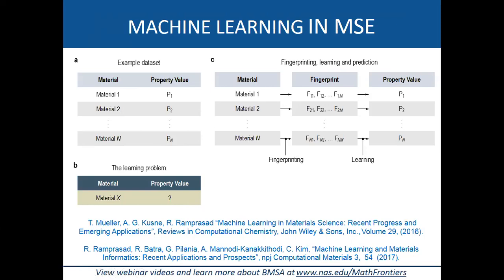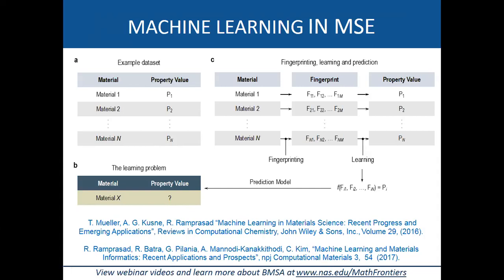Once fingerprinting is accomplished, we establish a mapping between those vectorial fingerprints and the property — a process we call learning, or machine learning or statistical learning. The learning step is largely numerical in nature. If we achieve this learning process, we have a functional form connecting fingerprint vectors to property values, and we can then answer the original question: what is the property of material X?